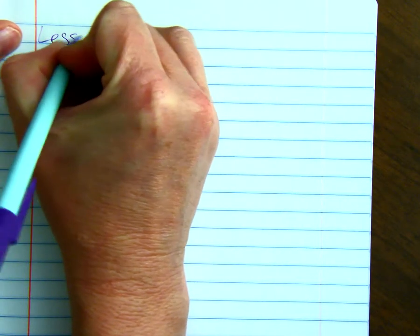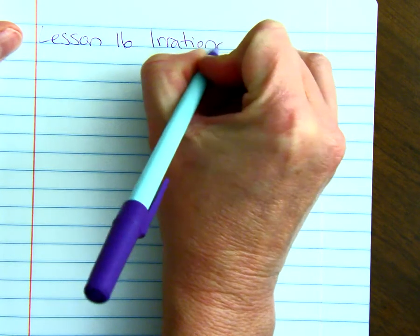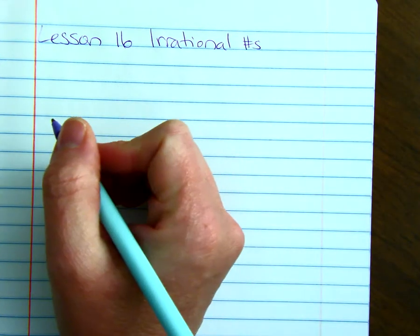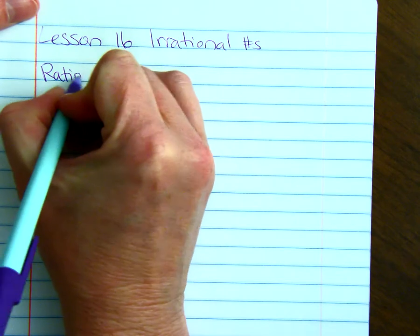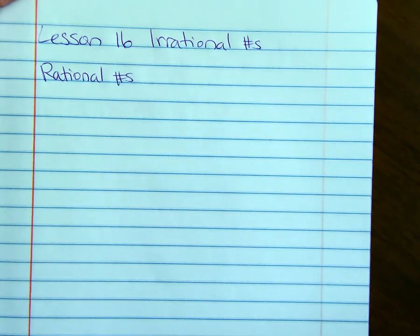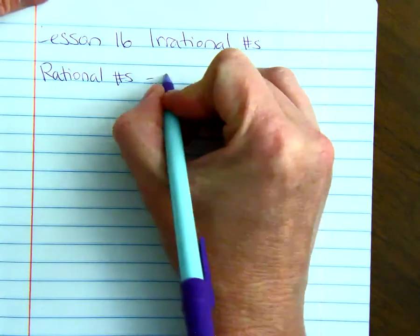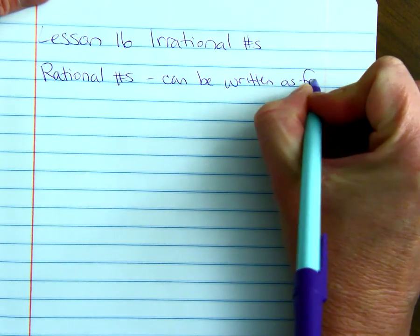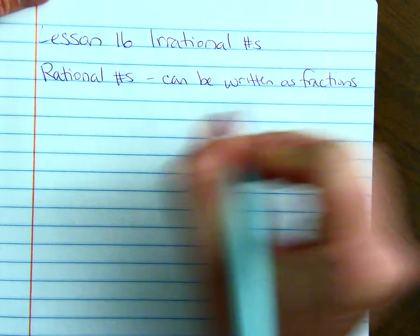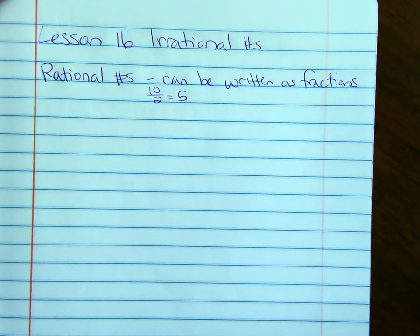Lesson 16, Irrational Numbers. So, rational numbers, we're going to talk about those first. These are numbers that can be written as fractions using integers. For example, 10 over 2, which is 5. So, 5 is rational.